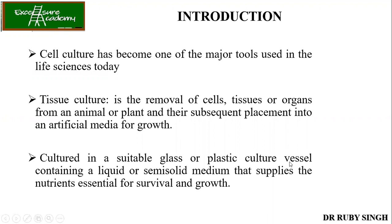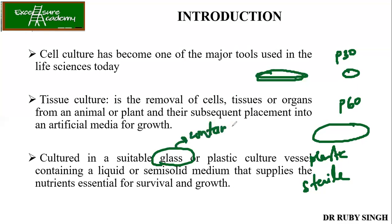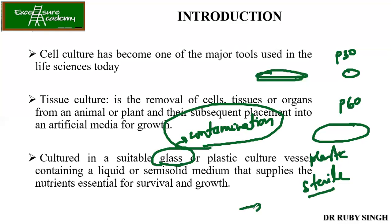These are cultured in suitable glass or plastic culture vessels containing liquid or semi-solid media which supplies the nutrients essential for survival and growth. The petri dishes come in sizes — P30 are the smaller ones and P60 are the bigger ones. We use plastic and they are sterile. Some people use glass, but the problem is contamination if it is not sterilized properly. In animal tissue culture we mainly use plastic, which is sterile and opened directly in the culture hood.